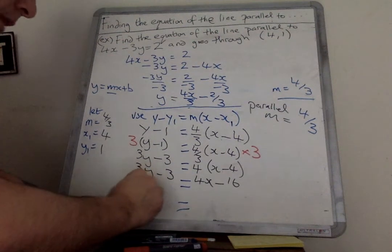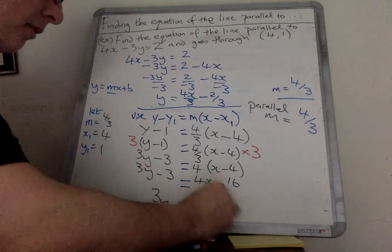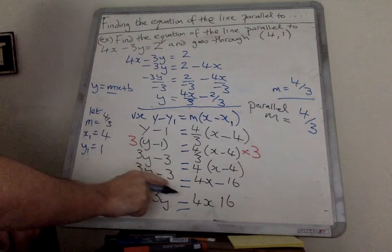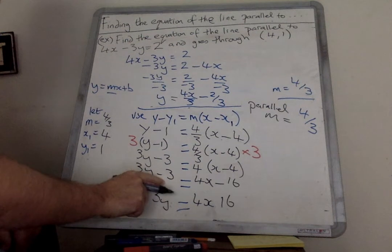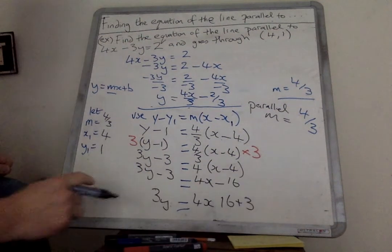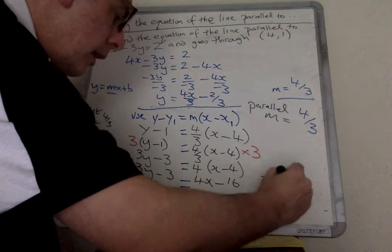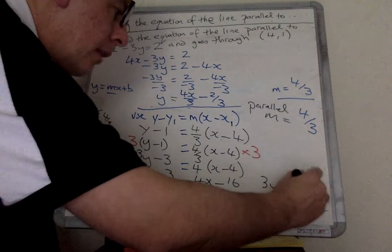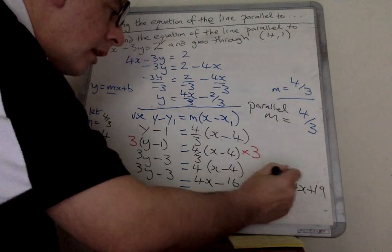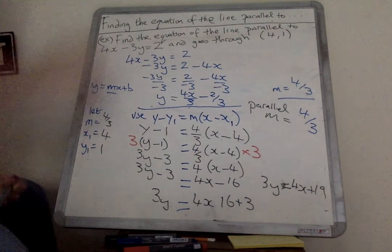I'd like the y's to be on their own, so let's put that over there. The minus 3 is going to now disappear by adding 3 to both sides. And I've just run out of a little bit of space. So the answer for this then is 3y equals 4x plus 19.